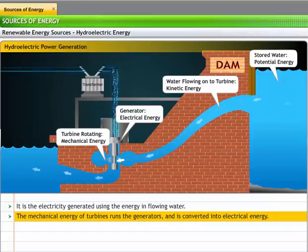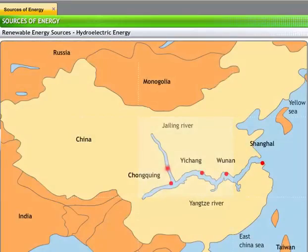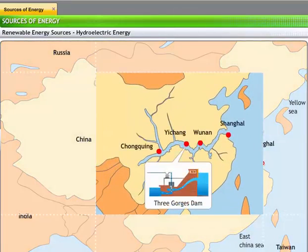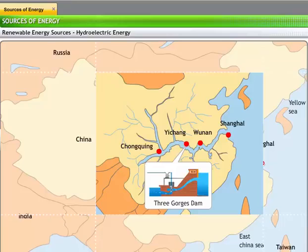Such power plants can ensure a continuous supply of electricity. The Three Gorges Dam in China, the world's largest hydroelectric power plant, supplies power to 9 out of 23 provinces in the country.